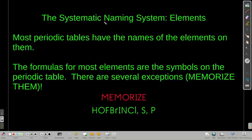But we're going to use the systematic naming system, starting out by the elements, which is pretty easy because most periodic tables have the names of the elements on them. And if not, you'll learn them real quickly just because we use them so much in this class. The formulas for the elements are just the symbols for those elements that are in the periodic table. There are several exceptions that you need to memorize. Those exceptions are hydrogen, oxygen, fluorine, bromine, iodine, nitrogen, chlorine, and then sulfur and phosphorus. This is a little mnemonic device that I learned that maybe helps you remember it: Hoffbrinkel. It's a nonsense word, right?